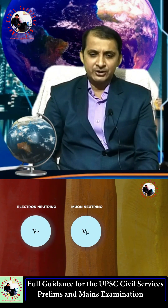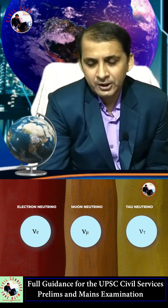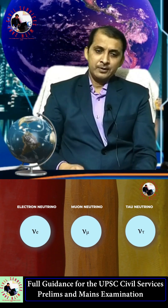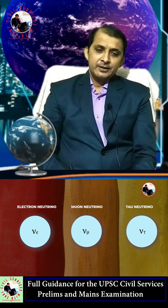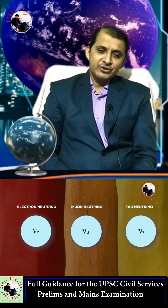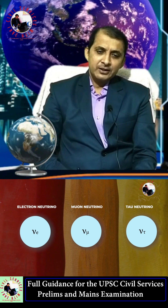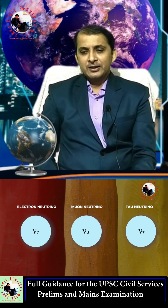There are basically three types of neutrinos: the electron neutrino, the muon neutrino, and the tau neutrino. The lightest is the electron neutrino and the heaviest is the tau neutrino.